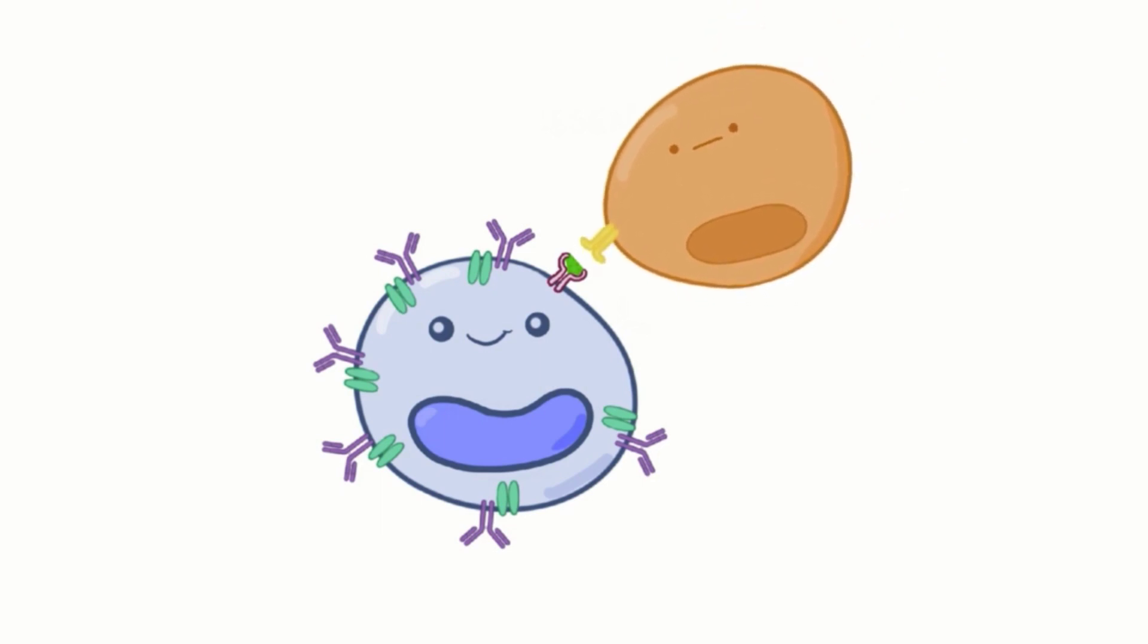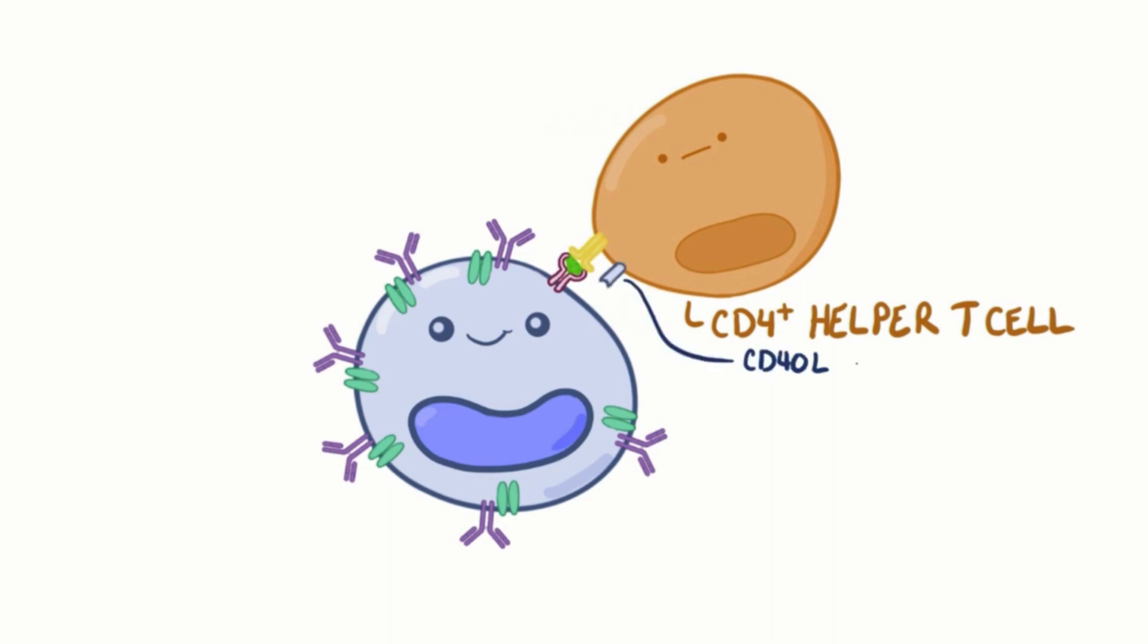Then at some point, along comes a CD4-positive helper T-cell that binds to the presented antigen, and when that happens, it expresses a protein called CD40 ligand on its surface. The CD40 ligand attaches to a receptor on the B-cell surface called CD40. This engagement is the key to activating B-cells.